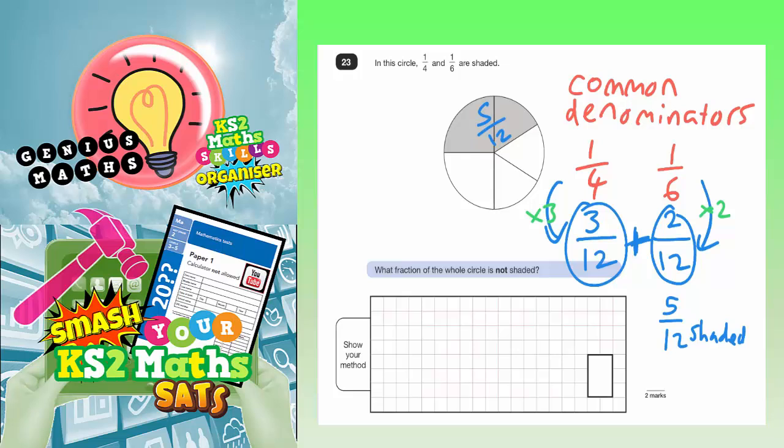But the question actually says what fraction is not shaded. So if five twelfths is shaded, not shaded must be the rest of it. And to get up to 12, you would need seven parts. So seven twelfths. So your final answer is seven twelfths.